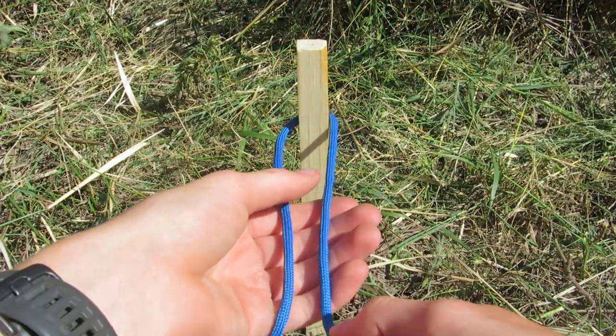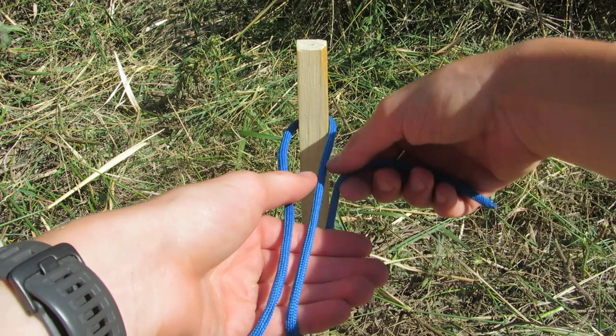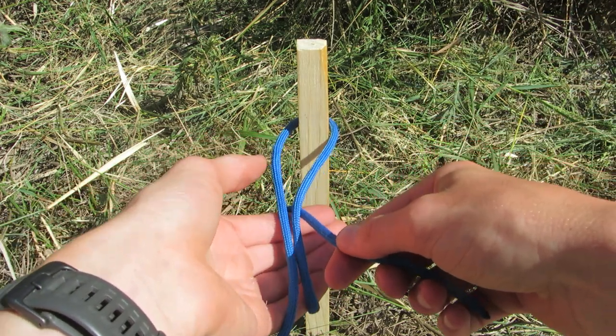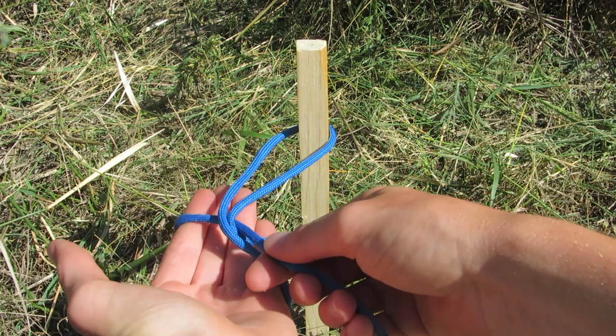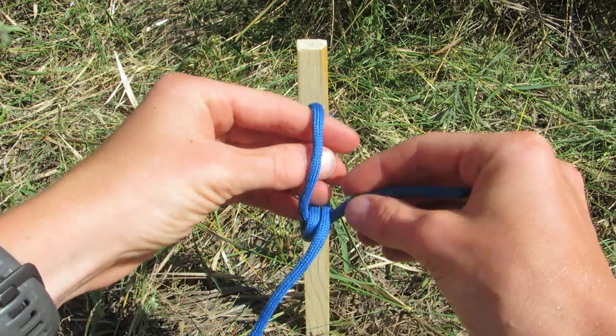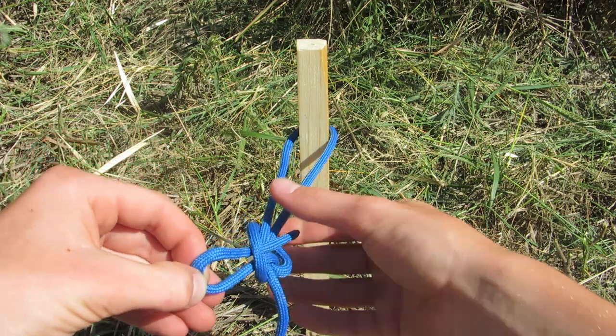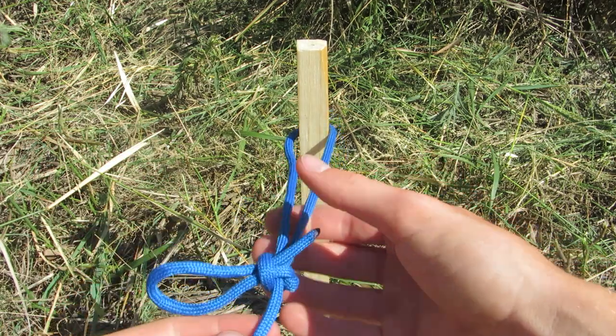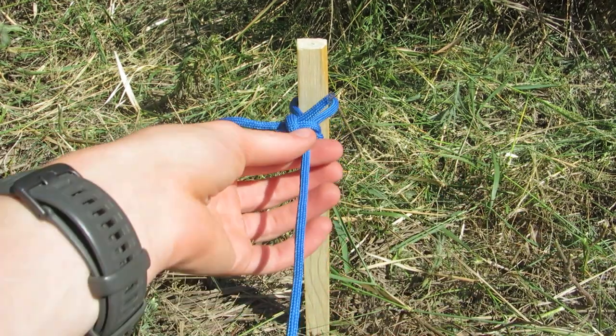Again, wrap your hand around like this, wrap the cord around, reach your hand, pull it out like this, then reach around the top, grab this bite, and pull it through. Don't pull it all the way through. Then you can cinch it up like this.